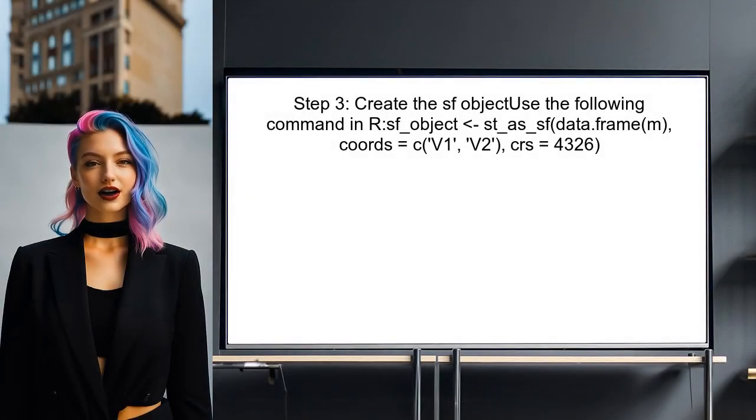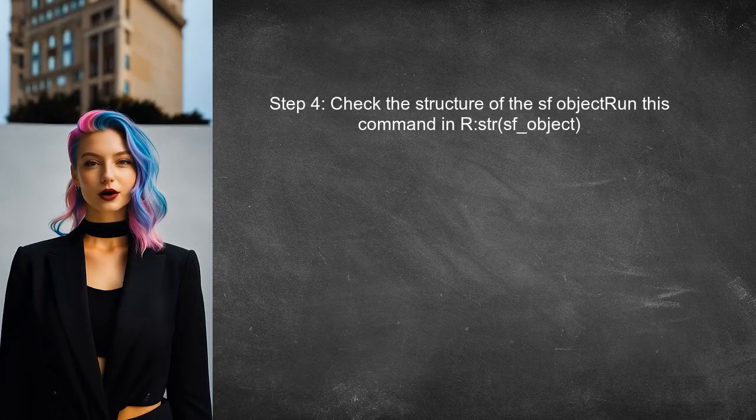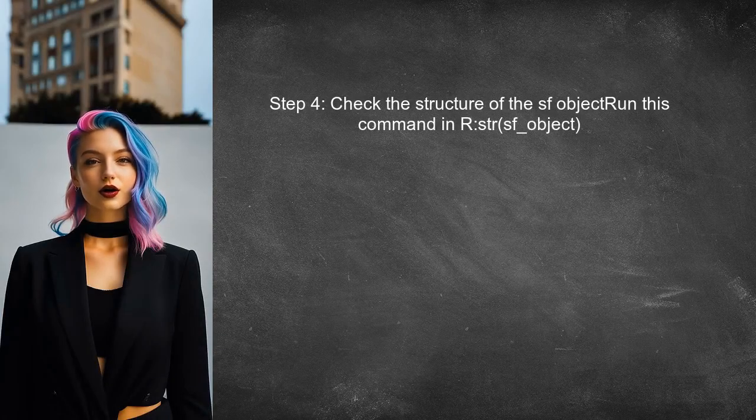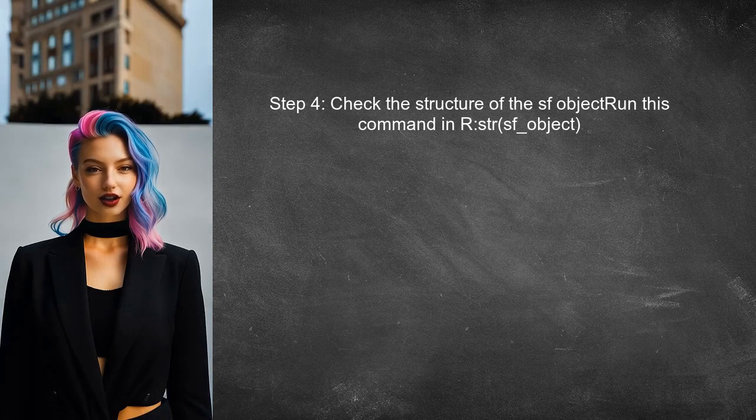Now the user can create the SF object. They should use the ST_SF function, specifying the matrix as the data source and defining the geometry using the ST_point function. Finally, the user can check the structure of the newly created SF object to confirm that it has been created correctly. This can be done using the str function.